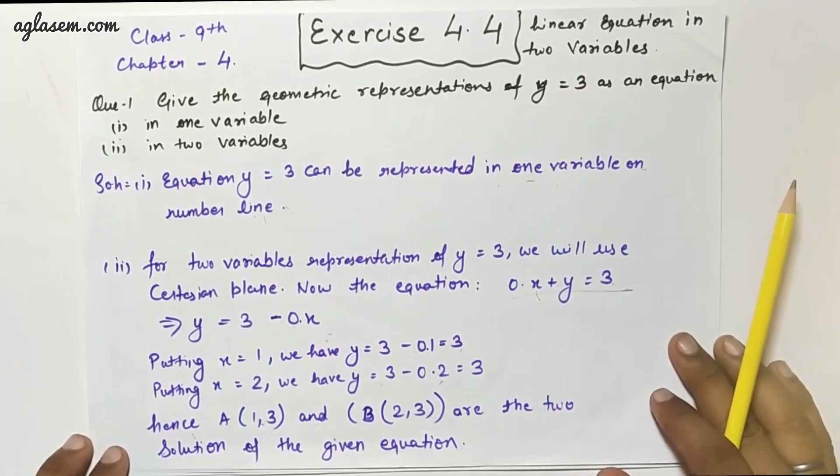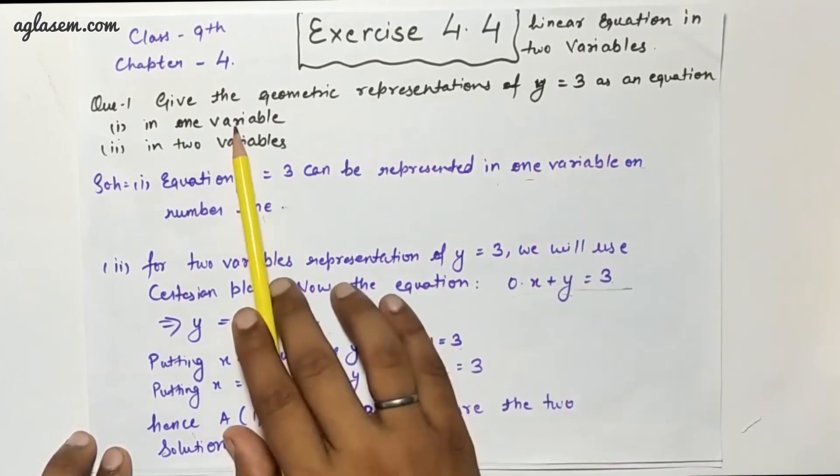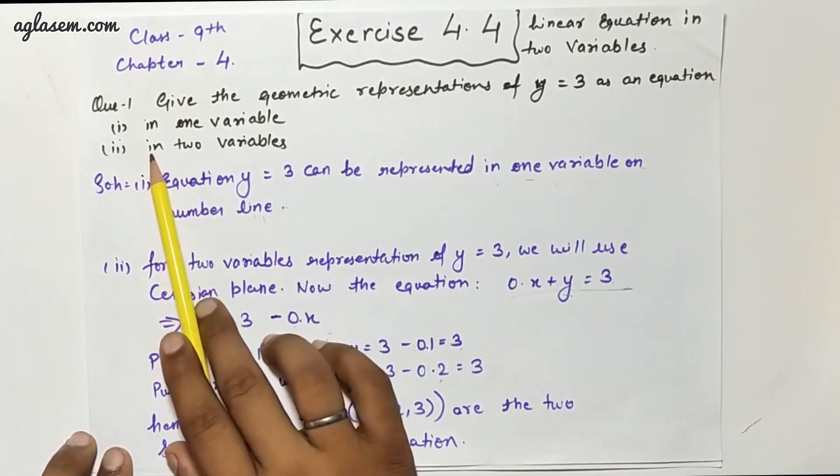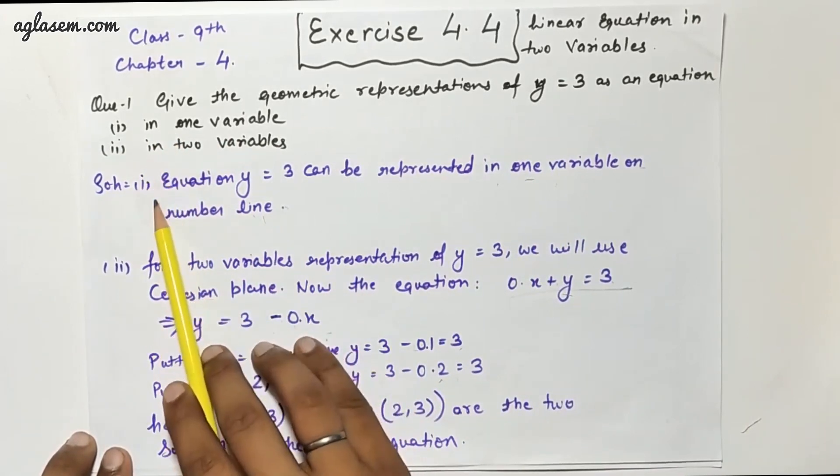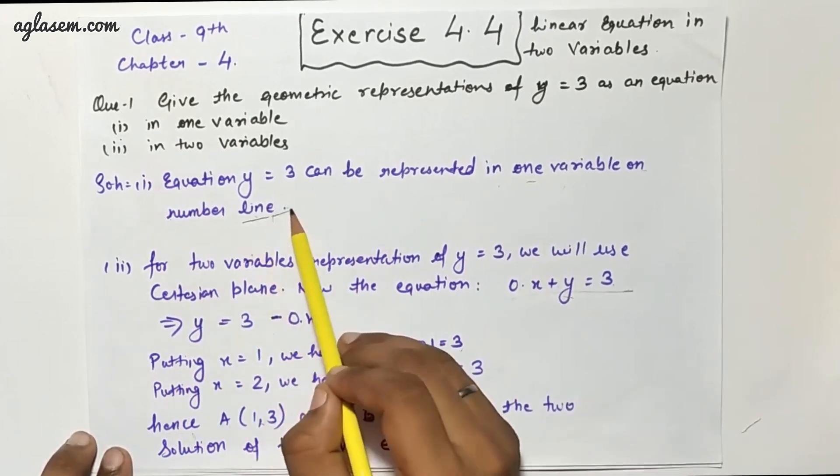Question 1 says: Give the geometrical representations of y equals 3 as an equation first in one variable. So let's solve for one variable, and we also have to solve in two variables. The equation y equals 3 can be represented in one variable on a number line.